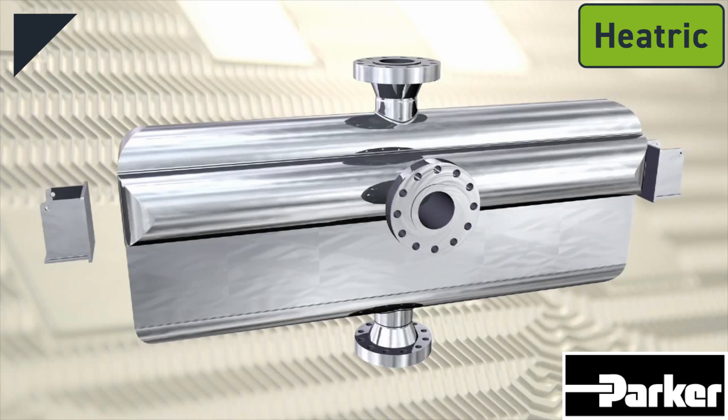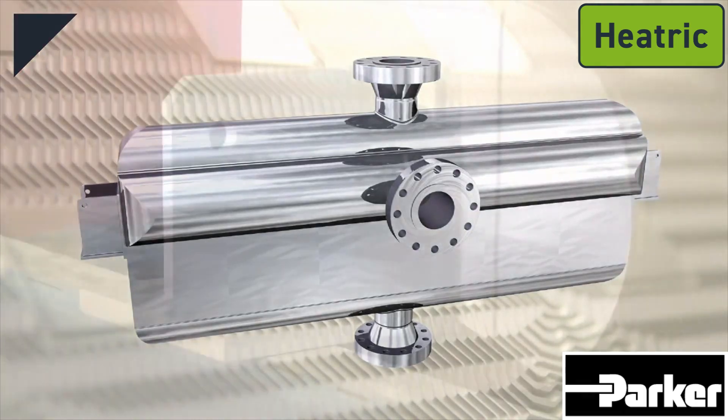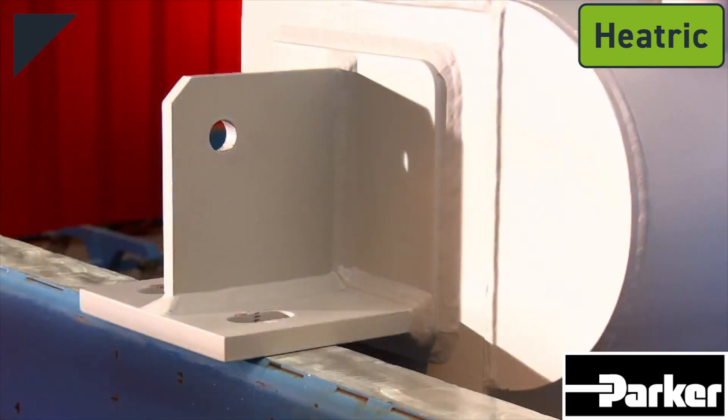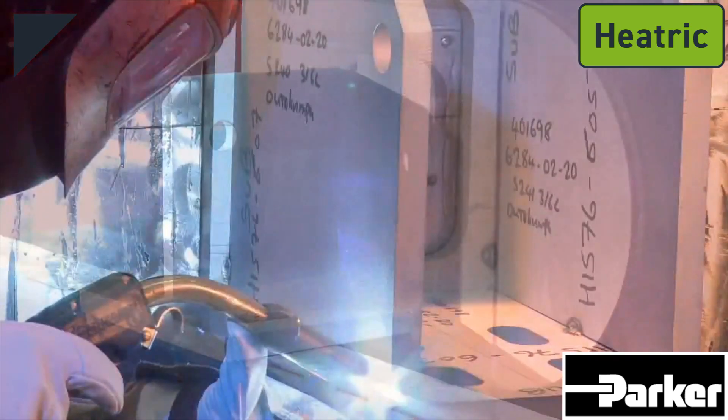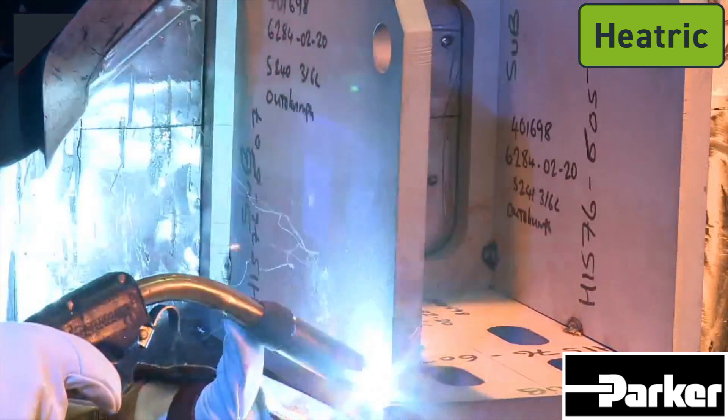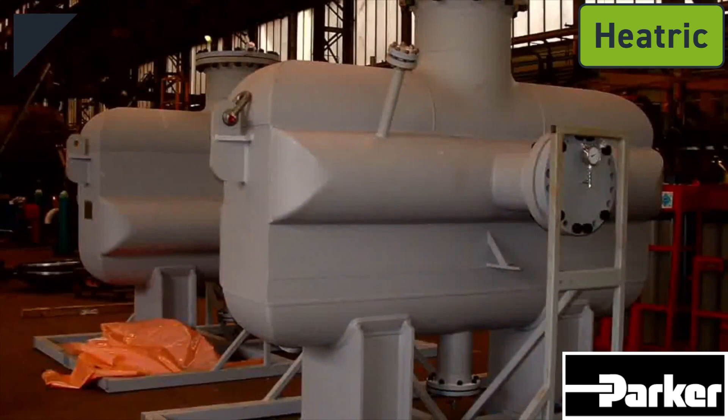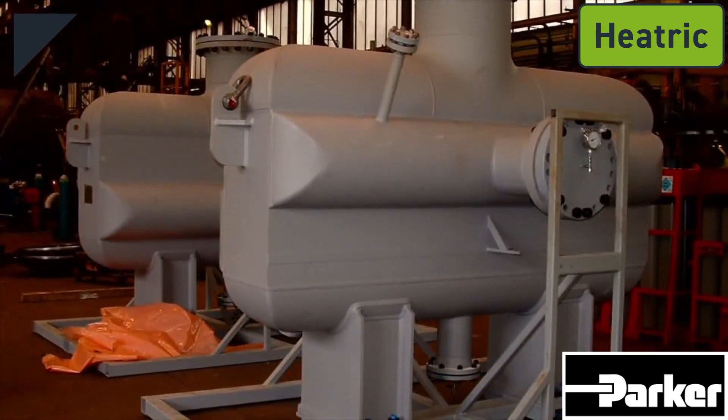Supports are then attached to the exchanger. The most widely used method is the end-type support, which are welded to the ends of the exchanger core. Alternatively, saddle-type supports can be fitted to the lower header of the exchanger.